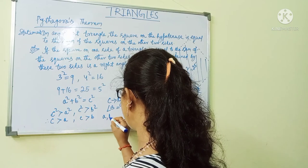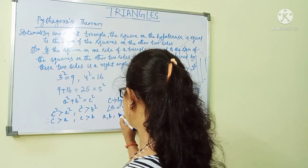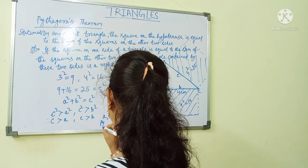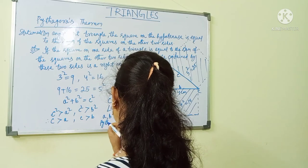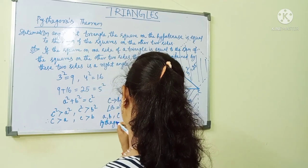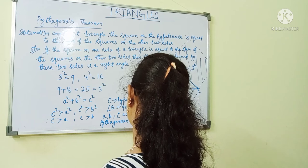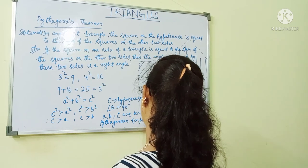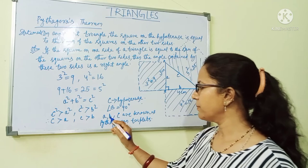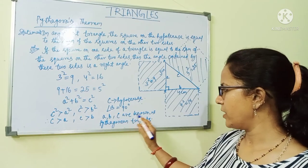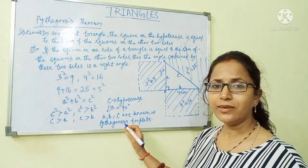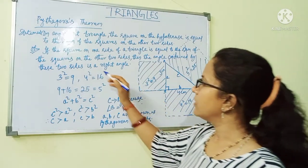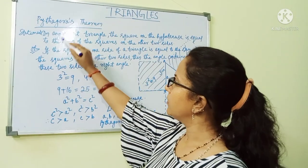So, A, B, C are known as Pythagorean triplets. This is the Pythagoras theorem.